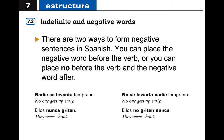There are two ways to form negative sentences in Spanish. You can place the negative word before the verb, or you can place 'no' before the verb and the negative word after. So 'nadie se levanta temprano' has 'nadie' before the reflexive verb. Or 'no se levanta nadie temprano' — 'no one gets up early' — but because 'nadie' comes after the verb, I have to put 'no' before the verb.